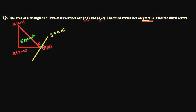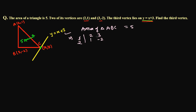We'll get a relation in x and y from the area, and we have another relation from the line equation. From both relations we'll solve for x and y. The area of triangle ABC is 5 square units. We use the crossing method — it's shorter and easier — with points (2, -1), (3, -2), and (x, y). You can also use the formula: one-half times [x1(y2 - y3) + x2(y3 - y1) + x3(y1 - y2)].